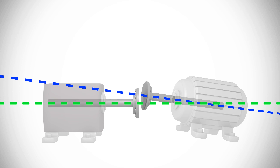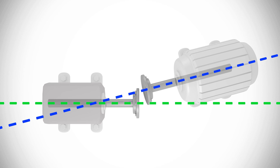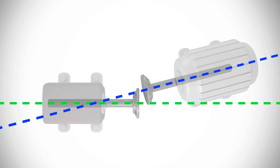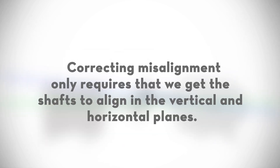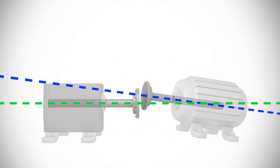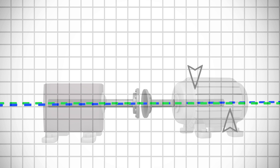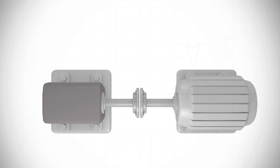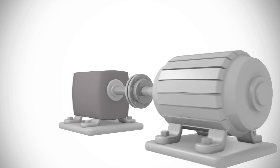What we usually see in the field is a combination of both offset and angular misalignment occurring in three dimensions, as you can see here as we rotate between the vertical plane and the horizontal plane. While it is much easier to understand misalignment if you can visualize it in three-dimensional space, correcting misalignment only requires that we get the shafts to align in the vertical plane and in the horizontal plane. Fortunately, we are able to adjust the relative position of the two shafts in these two dimensions. We can raise and lower the movable machine in the vertical plane, and we can move it side to side in the horizontal plane. If we get the shafts aligned in these two dimensions or planes, they will then be in tolerance and close to collinear.